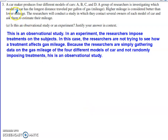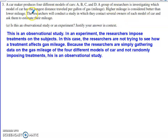The problem statement says we've got a car manufacturer. They make four different models of cars: A, B, C, and D. We have a group of researchers investigating which model of the car has the longest distance traveled per gallon — so we're trying to monitor the gas mileage. Higher mileage is considered better than lower mileage. The researchers are going to conduct a study where they contact several owners of each model of car and ask them to estimate their mileage.